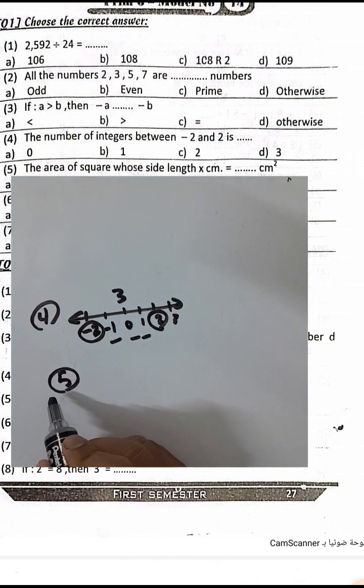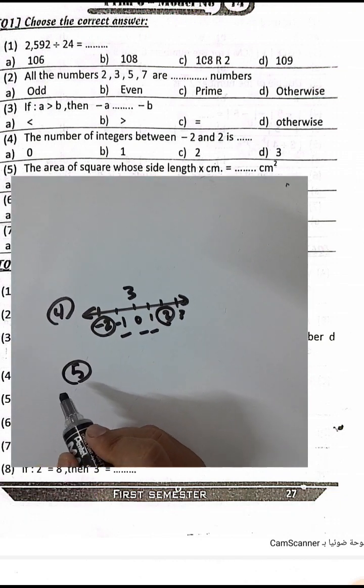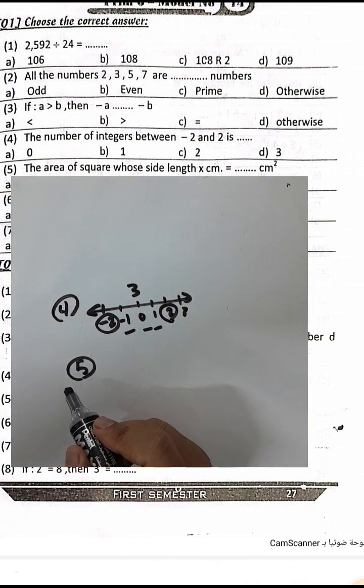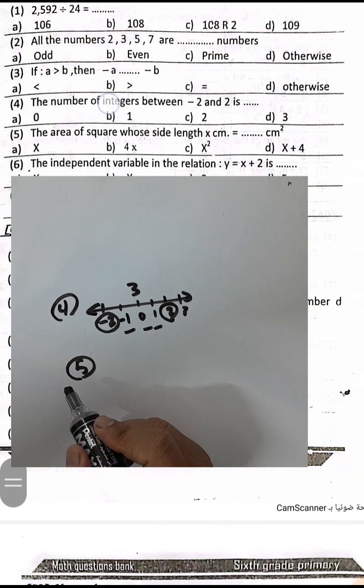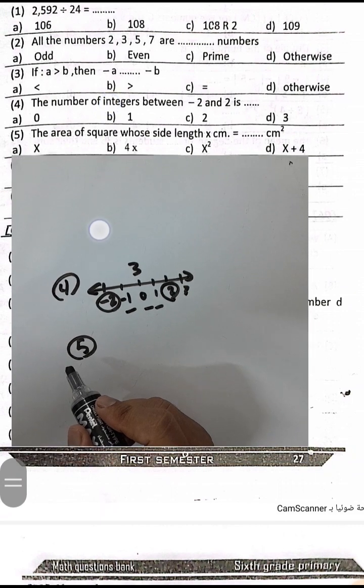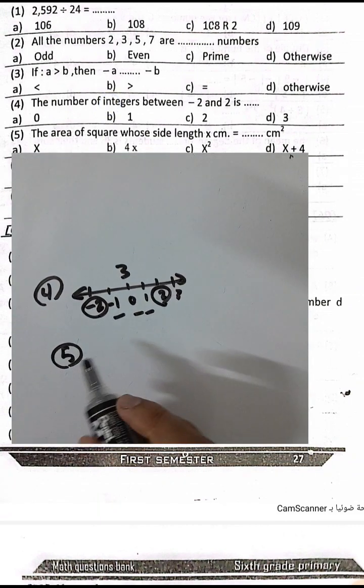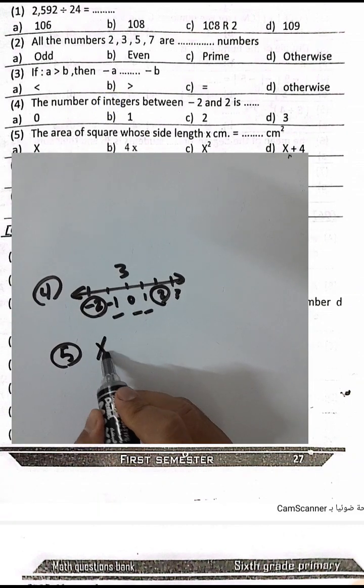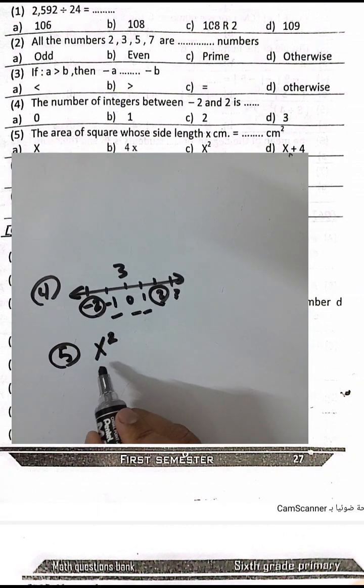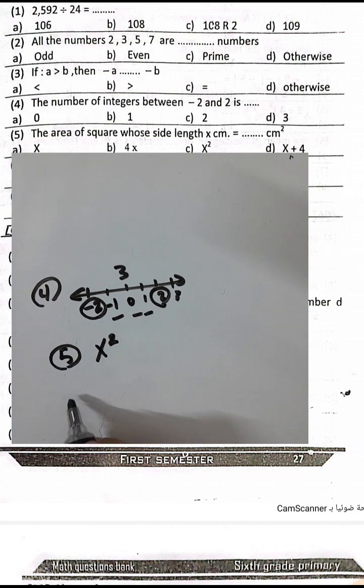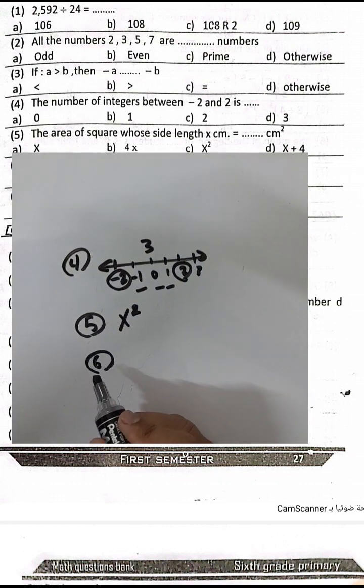Question number 5: The area of a square whose side length is x. The area of a square equals side times side, so x times x equals x squared. Question number 6: The independent variable in the relation y equals x plus 2 is x.